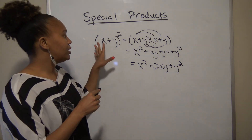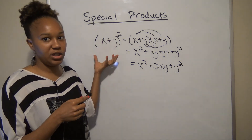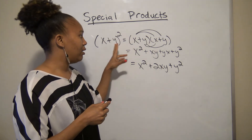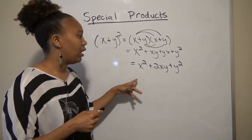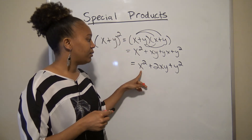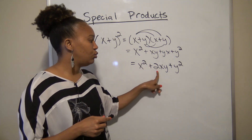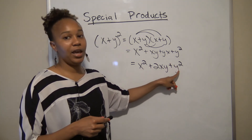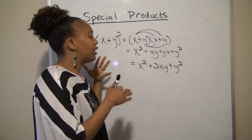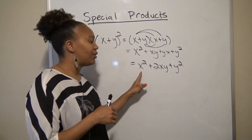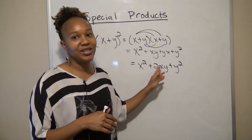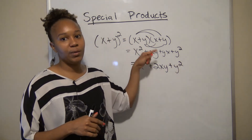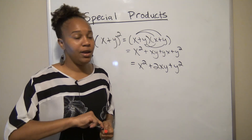Now I showed you that to demonstrate that regardless of what your binomial is — these are just generic variables x and y — when you square it and foil it out, you get the first term squared, plus 2 times the first term times the second term, plus the last term squared. So if you can remember that pattern when squaring a binomial, you don't have to go through the full foiling process every time.